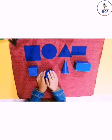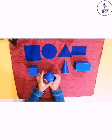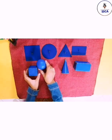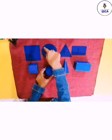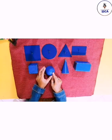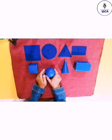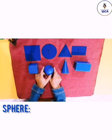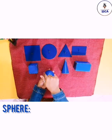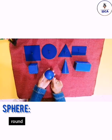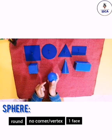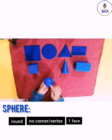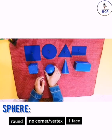The next shape is a solid shape — solid shape hai, it has height, it is three-dimensional. It looks like a circle because a circle is also round, and this is also round. But its name is sphere — S-P-H-E-R-E. It is round, it has no corners, and it has only one face.